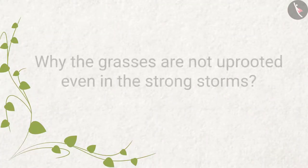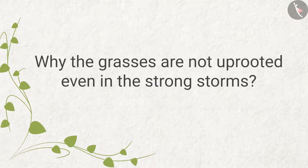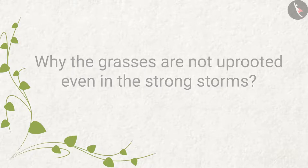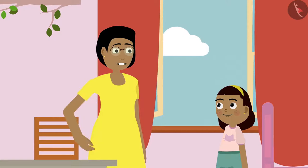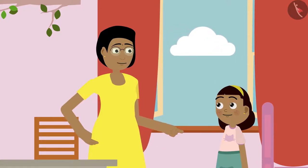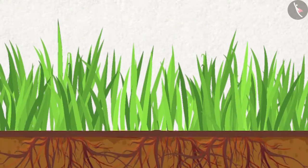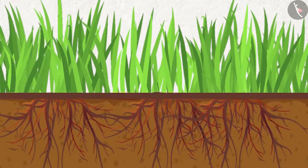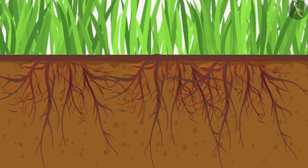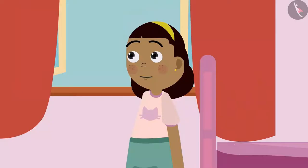Mother asks: Do you know why the grasses are not uprooted even in strong storms? Because Zia, the roots of the grass are very strong, and they can only be dug out. The roots of the grass under the soil are much longer than those seen above. Zia responds: Hmm, now I understand.